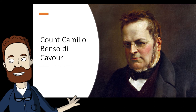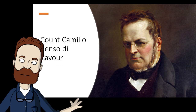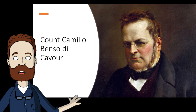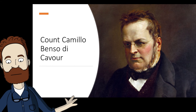That leader was Count Camillo Benso di Cavour. It is under Cavour's leadership that the Italian peninsula would become the nation of Italy. Like Bismarck, he was a brilliant statesman — his title was chief minister to the King of Piedmont. Cavour was born into a noble family and trained for a military career.